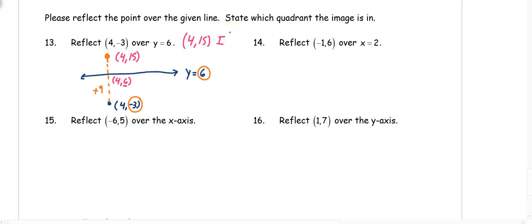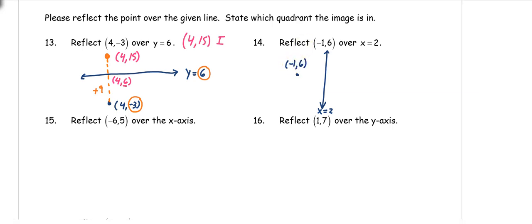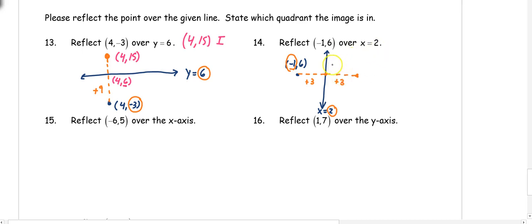Number 14: reflect (-2, 6) over the x equals 2 line, which is a vertical line. The original point is to the left of the line. Since this is an x equals line, look at the x coordinate: to get from -2 to 2 we add 4, then add 4 again. So the new x coordinate is 2 plus 4 equals... the speaker works through this and arrives at the reflected point being (5, 6), in the first quadrant.